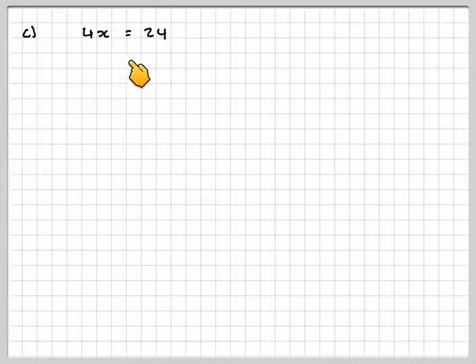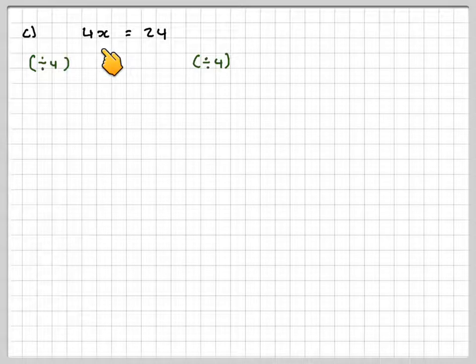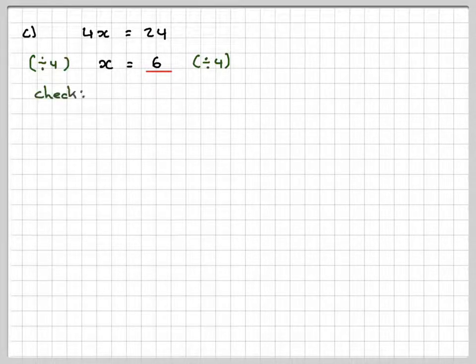C: 4x, 4 times x, equals 24. What's the opposite of multiplying? Dividing. So dividing both sides by 4, 4x divided by 4 gives x, and 24 divided by 4 gives 6. x equals 6. We do a check, and it's very easy to see that 4 times 6 equals 24. Correct.